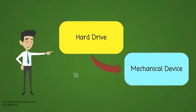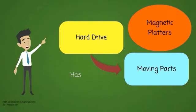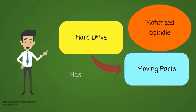A hard drive is a mechanical device. It has several moving parts. Magnetic platters store the data itself. Motorized spindle spins the platters.